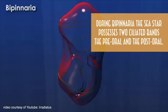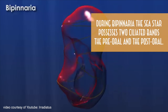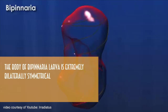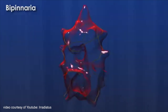During the bipinnaria stage, the sea star possesses two ciliated bands: the pre-oral and the post-oral. The pre-oral ciliated band surrounds the highly developed pre-oral lobe of the larva. The post-oral ciliated band appears to be longitudinally placed and forms a complete ring between the mouth and the anus. The body of the bipinnaria larva is extremely bilaterally symmetrical, but subsequently the internal structures assume asymmetry. It is a free-swimming larva, and the anterior end of the archenteron develops as the mouth while the blastopore becomes the anus.